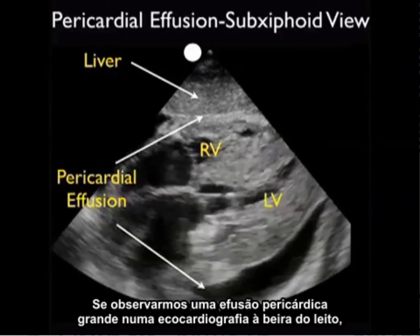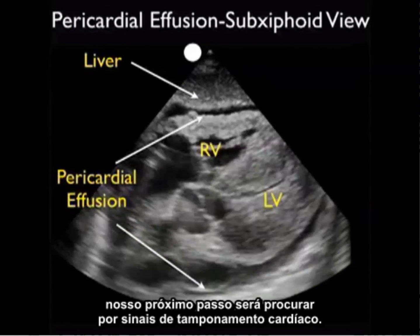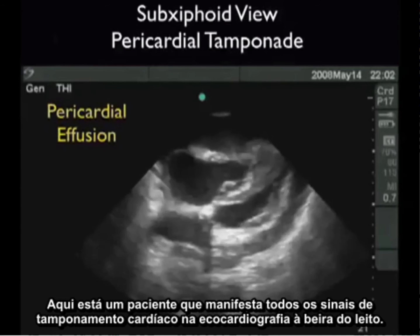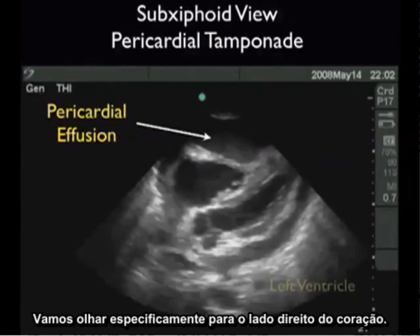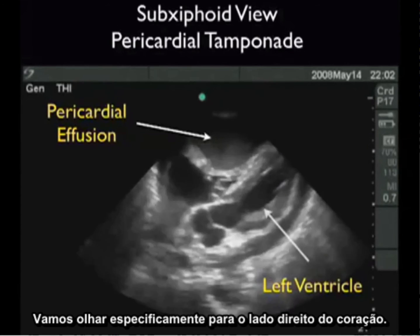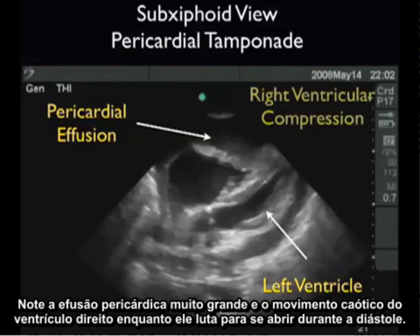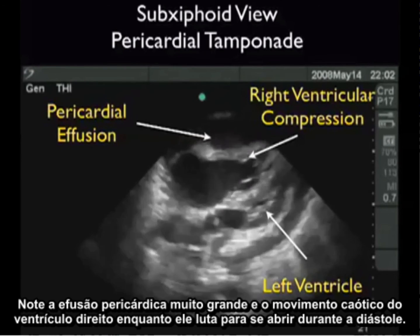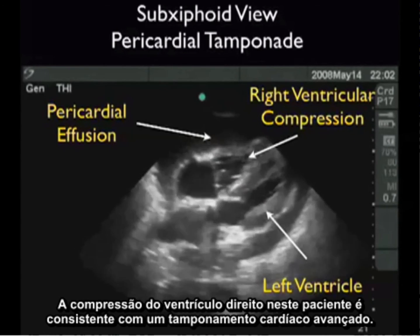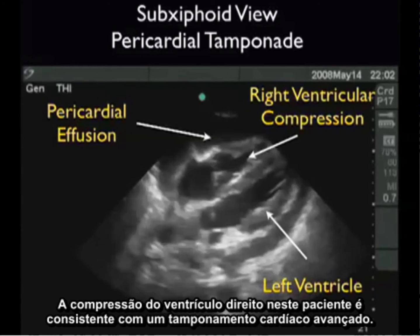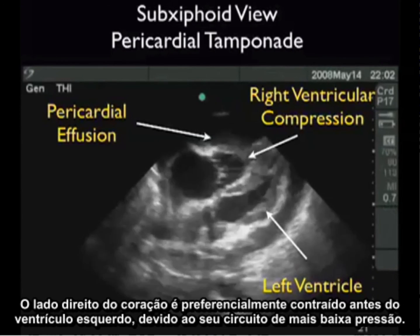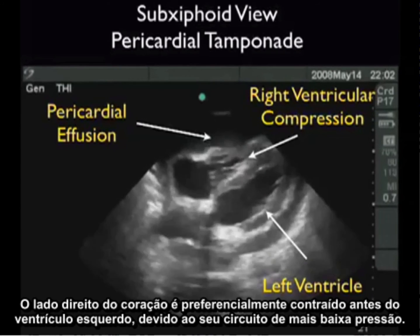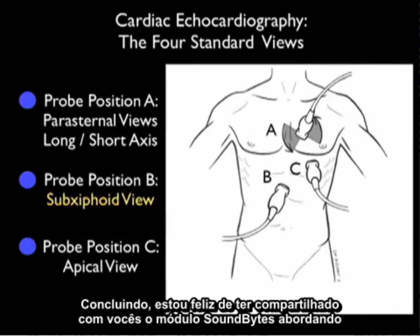If we see a large pericardial effusion on bedside echo, our next move is to look for signs of cardiac tamponade. Here's a patient who manifests all the signs of cardiac tamponade on bedside echo. Notice the very large pericardial effusion and note the chaotic movement of the right ventricle as it struggles to open during diastole. The compression of the right ventricle in this patient is consistent with advanced cardiac tamponade. The right side of the heart is preferentially compressed before the left ventricle due to its lower pressure circuit.